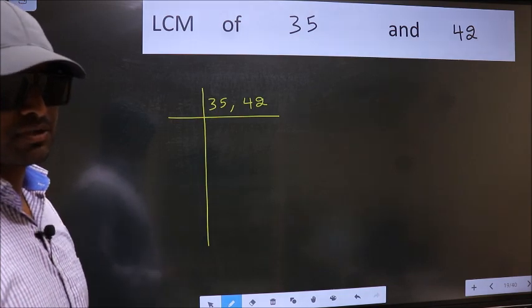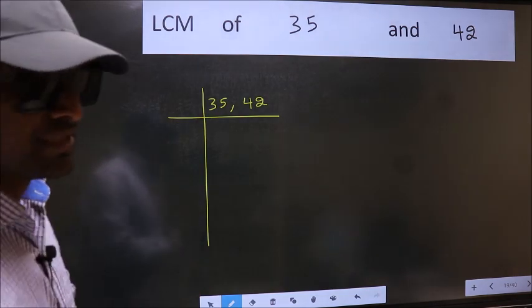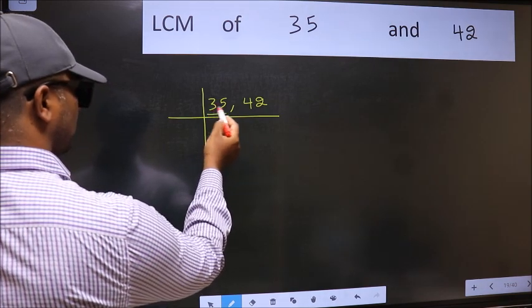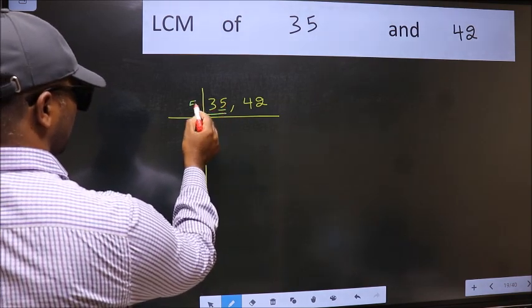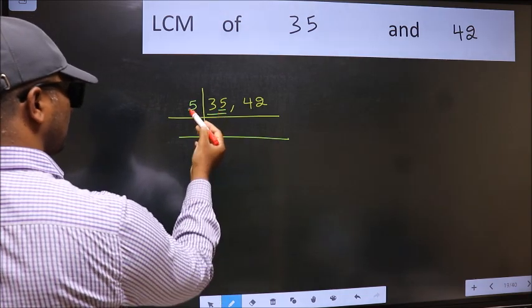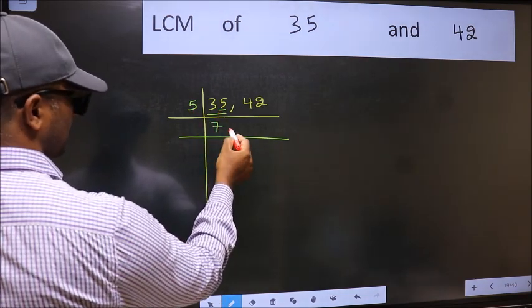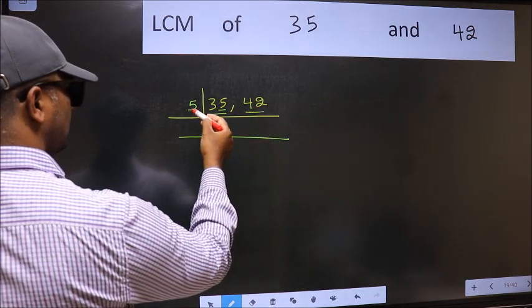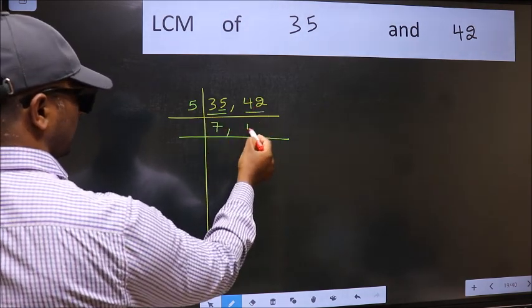Now you should focus on the first number which is 35 here. In this number, last digit 5. So take 5. When do we get 35 in 5 table? 5 7s, 35. The other number 42, not divisible by 5. So you write it down as it is.